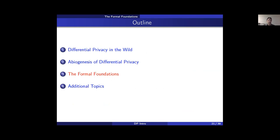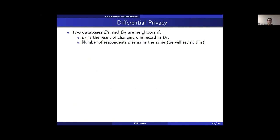Now let's examine differential privacy more systematically. Differential privacy is built on the concept of neighboring databases. Two databases are neighbors if you can obtain D2 by changing exactly one record in D1 — the difference is the response of a single individual, and that's where the 'differential' part of differential privacy comes from. If we change one person's response, N, the number of people, stays the same.